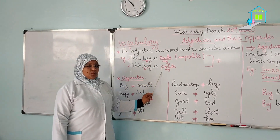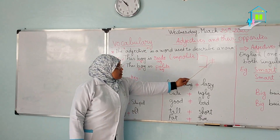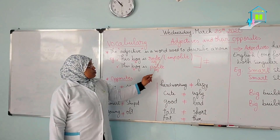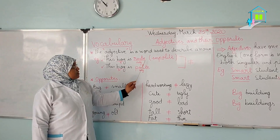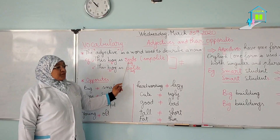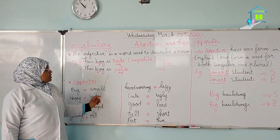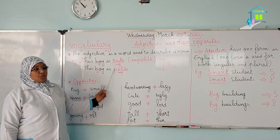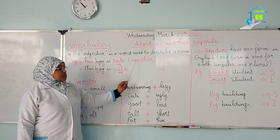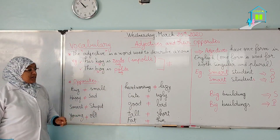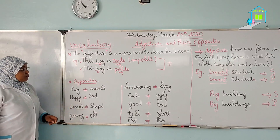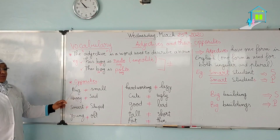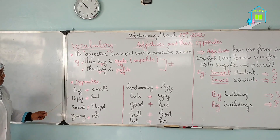So rude and polite are opposites. Impolite is similar in meaning to rude, but polite is the opposite of rude and the opposite of impolite. Let's move on to check the opposites, which means adjectives and their opposites.